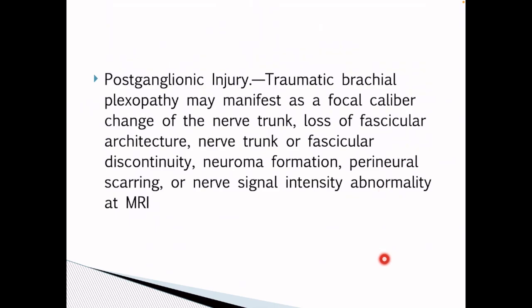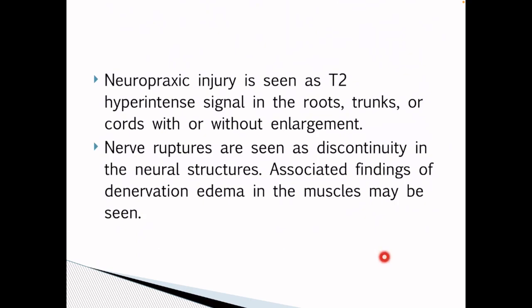Postganglionic injury: Traumatic brachial plexopathies may manifest as a focal caliber change of the nerve trunk, loss of fascicular architecture, nerve trunk or fascicular discontinuity, neuroma formation, perineural scarring, or nerve signal intensity abnormality at MRI. Neuropraxic injury is seen as T2 hyperintense signal in the roots, trunks or cords with or without enlargement. Nerve ruptures are seen as discontinuity in the neural structure. Associated findings of denervation edema in the muscle may also be seen.